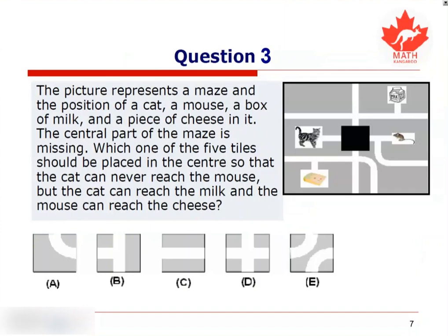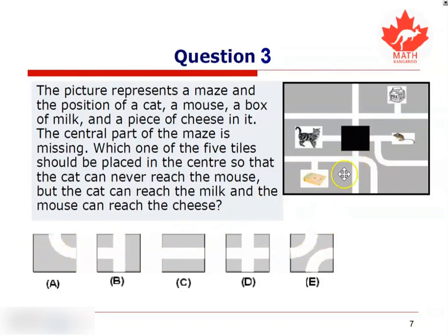Here's example number three, question three. This picture represents a maze and the position of a cat, a mouse, a box of milk, and a piece of cheese in it. The central part of the maze is missing. Which one of these five tiles should be placed in the center so that the cat can never reach the mouse, but the cat can reach the milk, and the mouse can reach the cheese? We'll do this through a process of elimination — we'll place these five tiles into the center of the maze one by one to see which one works.